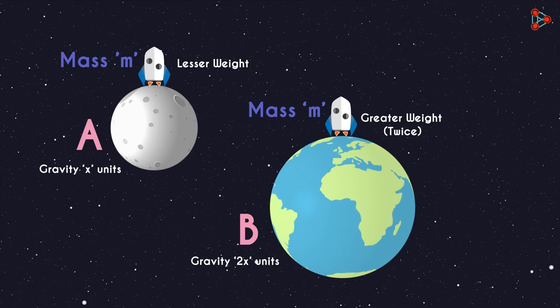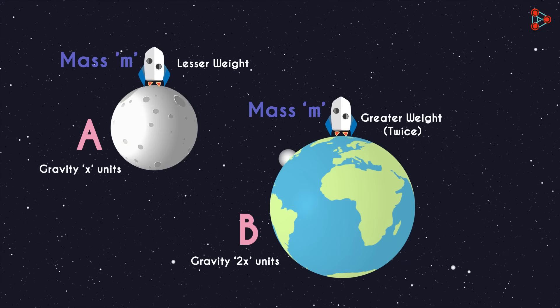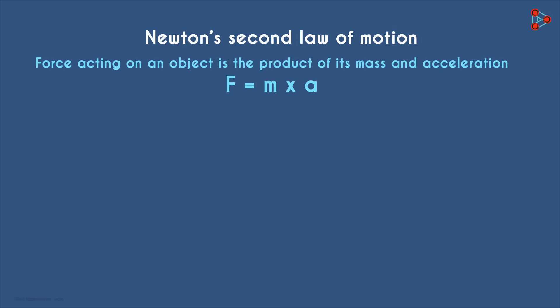So the weight of an object is a measurement of gravitational force acting on it. How can we understand weight using a formula? We know the Newton's second law of motion which says that the force acting on an object is the product of its mass and acceleration.